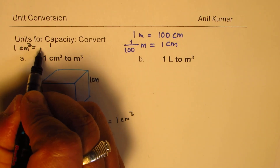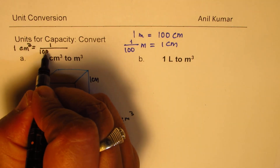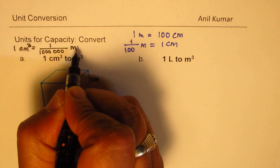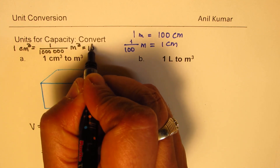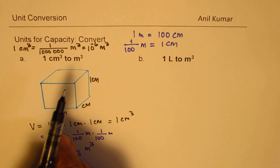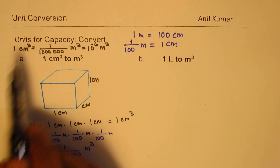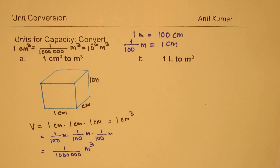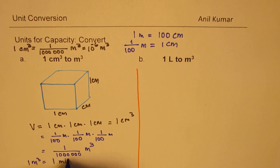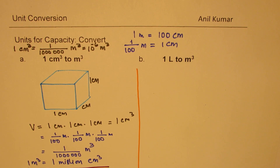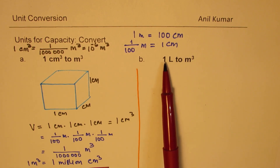So one centimeter cube equals one over one million, or ten to the power of minus six, meter cube. You can also say that one meter cube equals one million centimeter cube. That's an easy way to remember it.